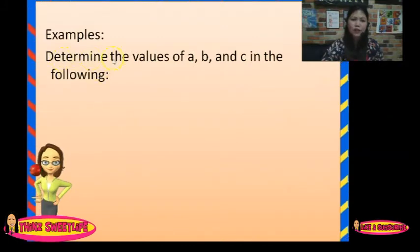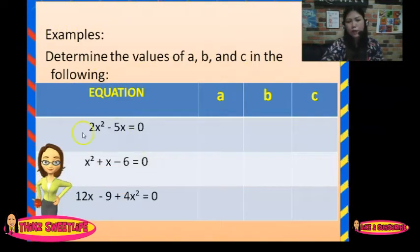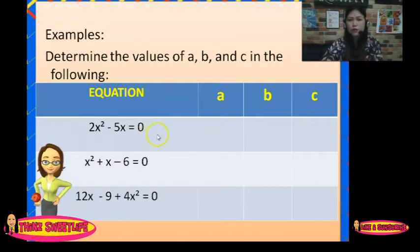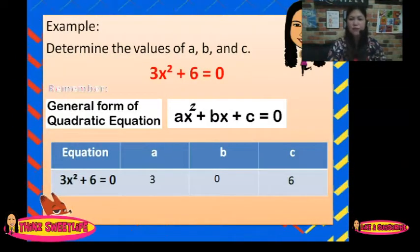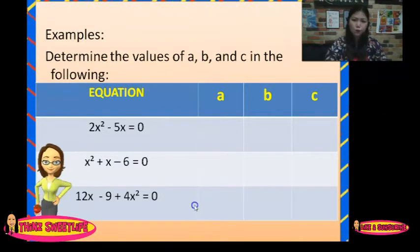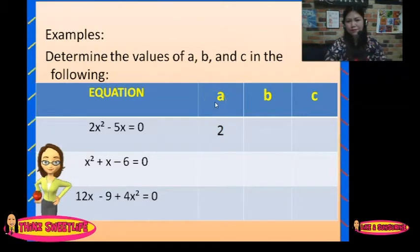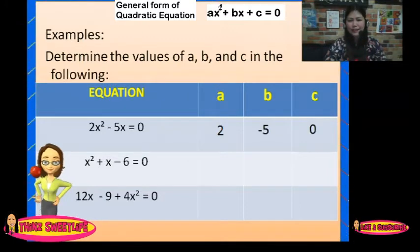We have another example. Determine the values of A, B, and C in the following equations. The first one is 2x squared minus 5x equals 0. Remember the general form Ax squared plus Bx plus C equals 0. The A here is 2, the B is negative 5, and the C is 0.